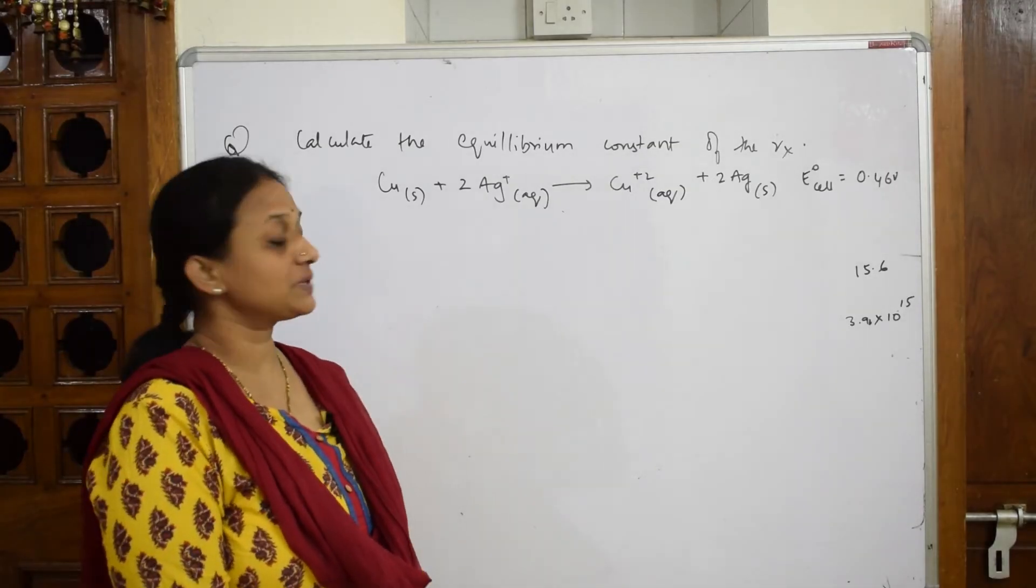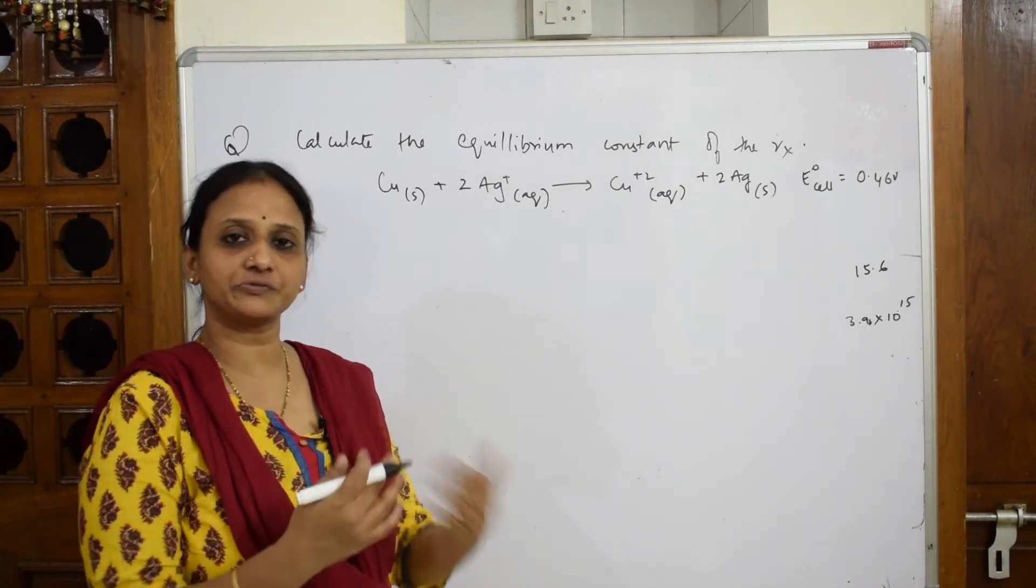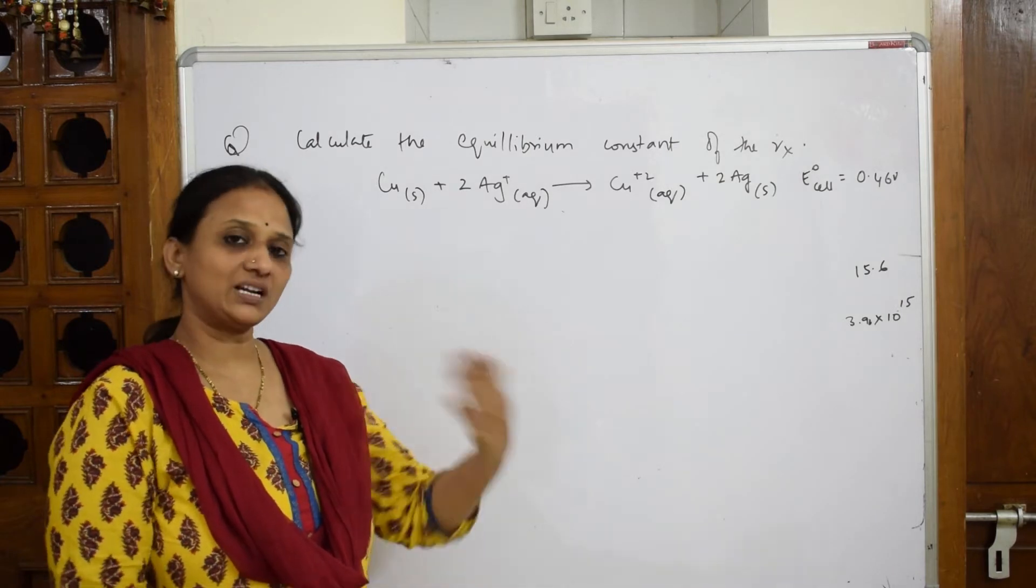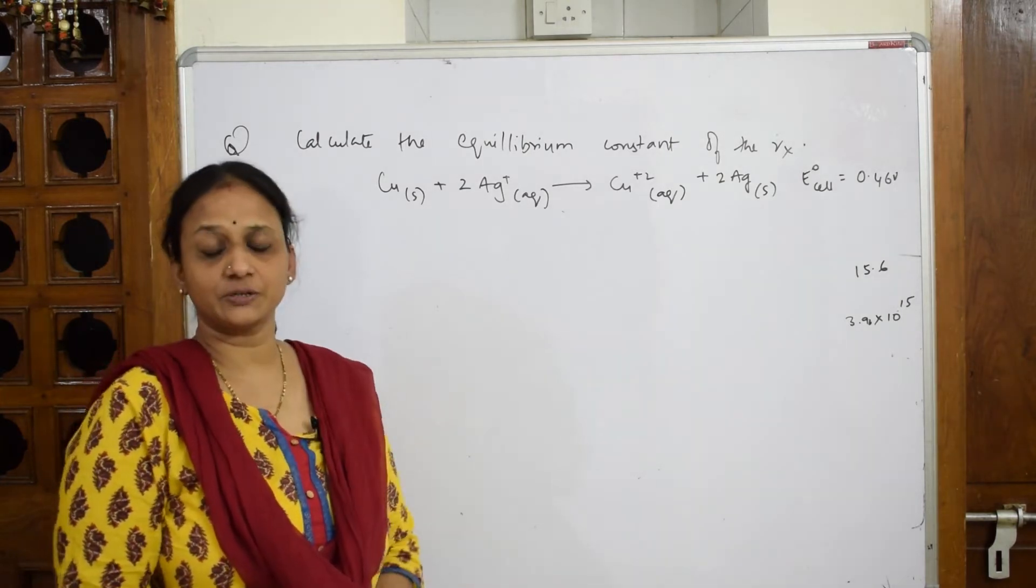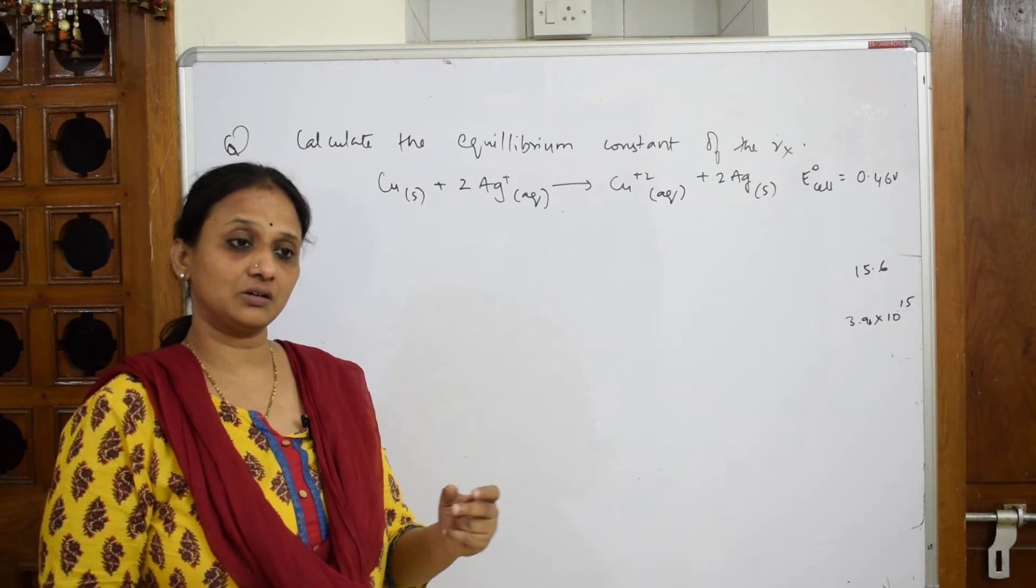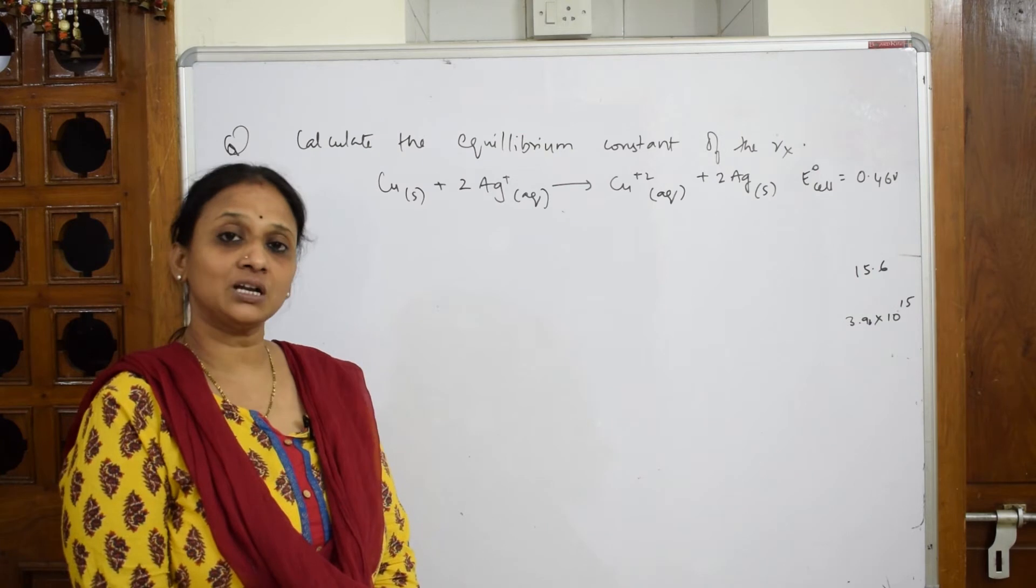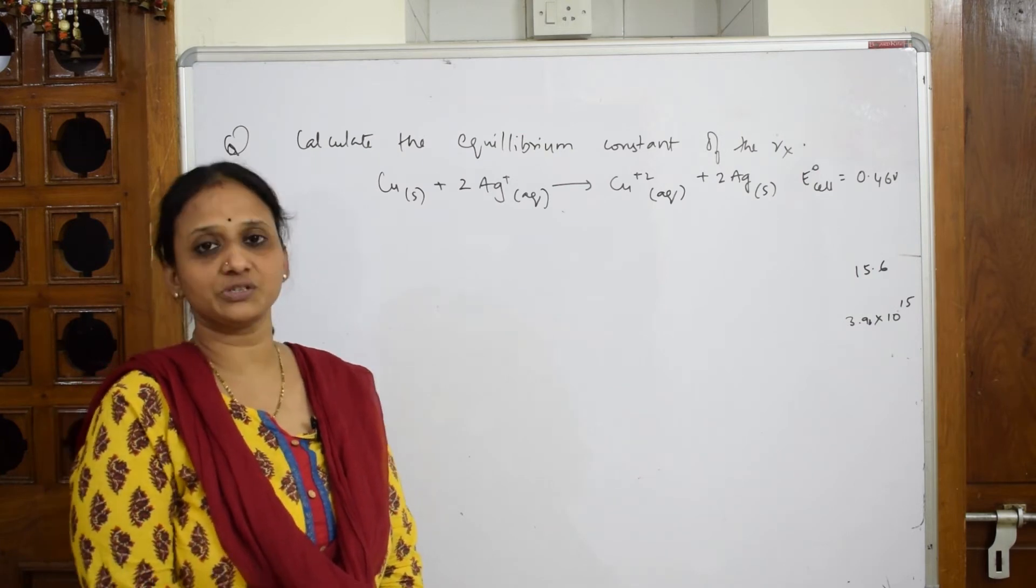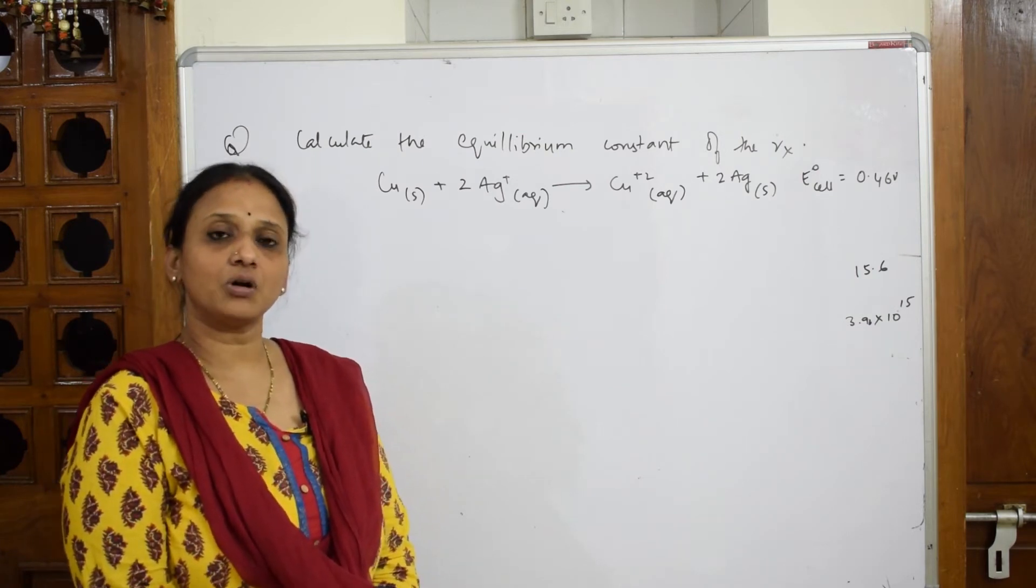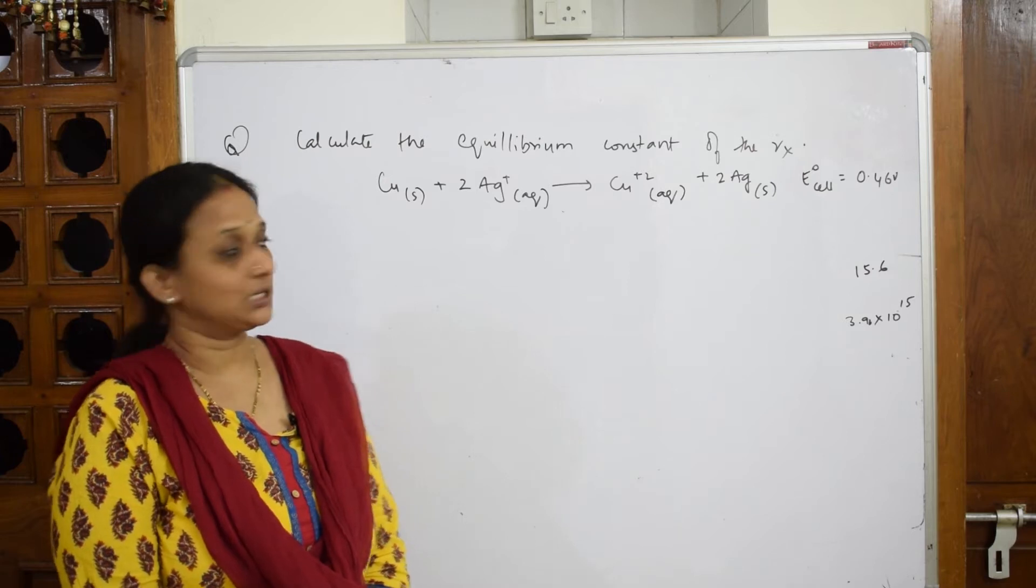Let's do one more numerical based on the equilibrium constant. I'm trying different varieties of numericals: one directly substituting the Nernst equation, one taking the data and finding the equilibrium constant, one calculating Kc and then substituting into the Nernst equation. So every model or type, I'm trying to do one numerical.